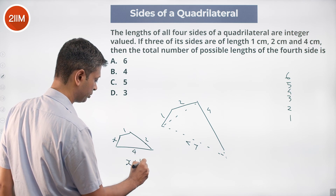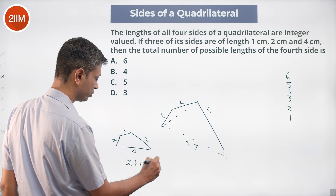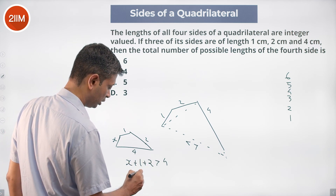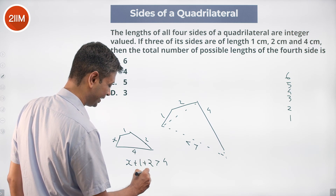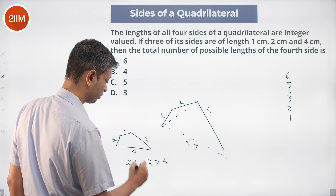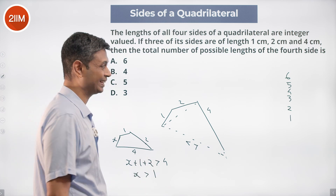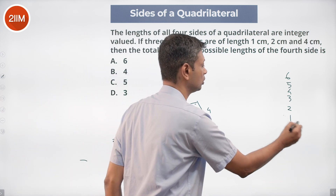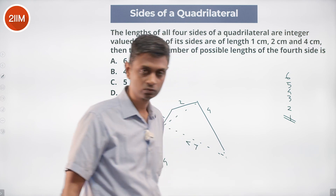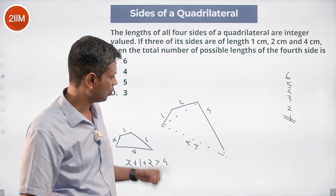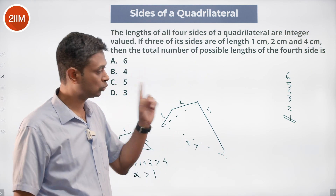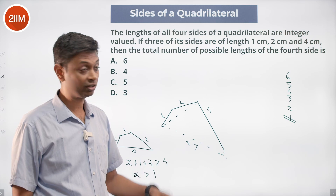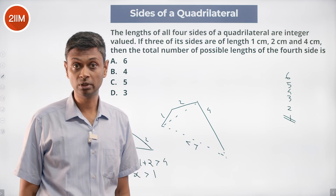X plus 1 plus 2 should be greater than 4, so X should be greater than 4 minus 3, which is 1. X cannot equal 1 — that is ruled out. So for example, 1, 2, 2, 4 is possible, and 1, 2, 4, 6 is also possible.